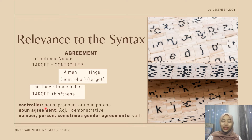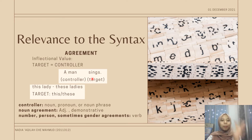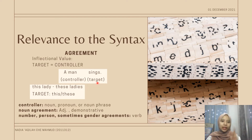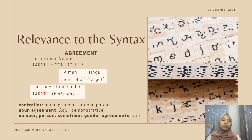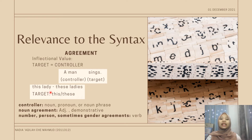A controller is usually a noun, a pronoun, or a noun phrase where it controls the target. For example, 'a man sings' — 'a man' is the controller; it controls the word after that, which is a verb: 'sings,' the target. Since 'a man' is singular, it controls the verb 'sing,' so adding the morpheme S makes it 'a man sings.' Same goes with 'this lady' and 'these ladies' — the target is 'this' and 'these,' and the controller is 'lady' and 'ladies.' Seeing 'lady' tells us it is singular, so we choose 'this' instead of 'these,' giving us 'this lady' and 'these ladies.'